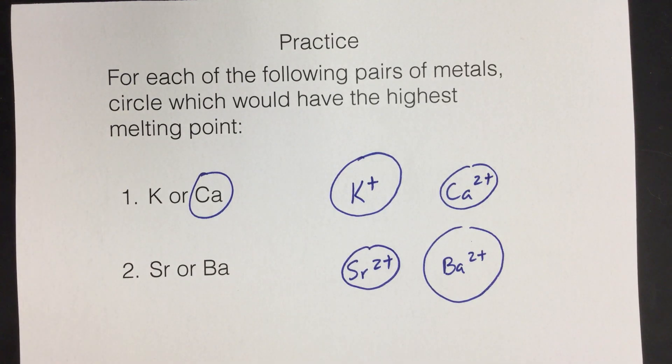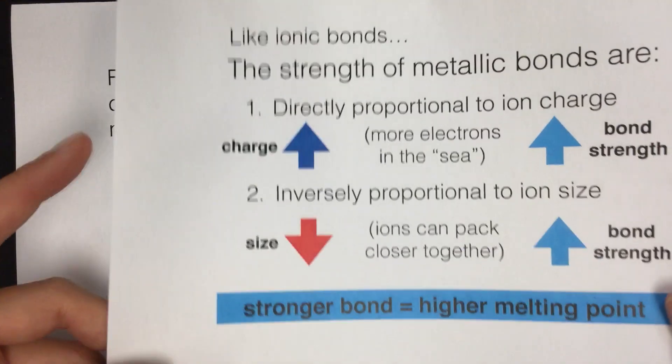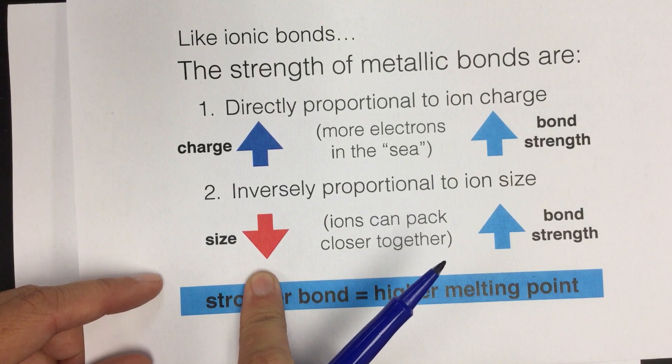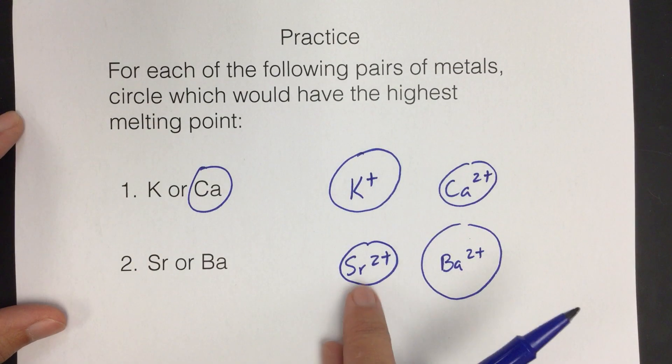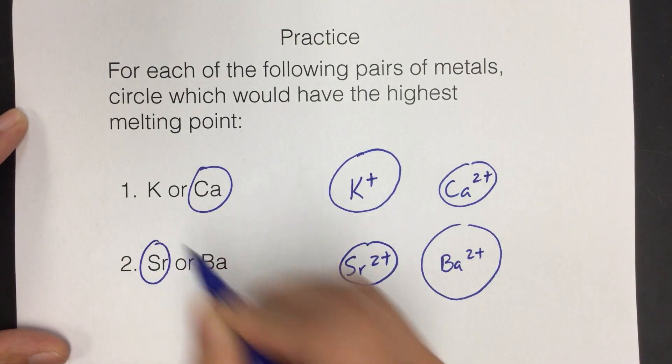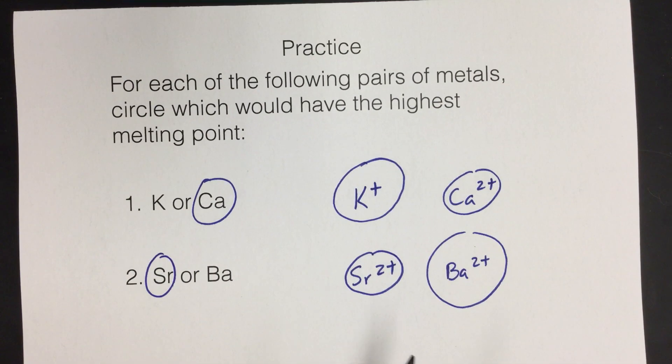If barium is the larger atom, strontium is the smaller atom, we want the smaller one. That will give us a stronger bond. So between strontium and barium, we're going to pick the smaller one. So strontium will be the correct answer for this.